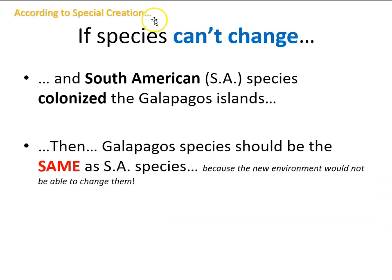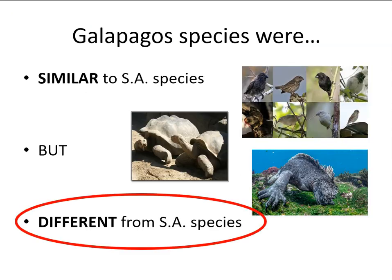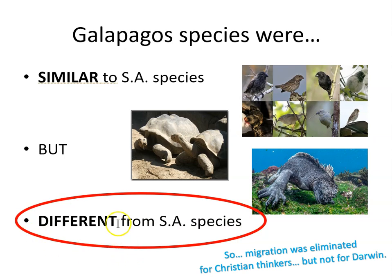According to special creation — the Christian worldview — if species can't change (and that was a standard feature of Christian thinking: species were fixed and unchanging since God created them), then if South American species colonized the Galapagos Islands, the Galapagos species should be the same as South American species, because the new environment would not be able to change them. But what did Darwin find? The Galapagos species were similar to South American species, but importantly also different. So simple migration was not sufficient for Christian thinkers, though Darwin continued to seriously entertain that option.